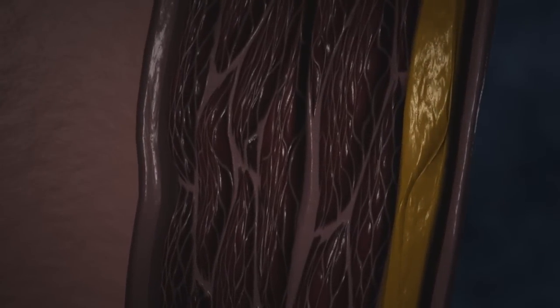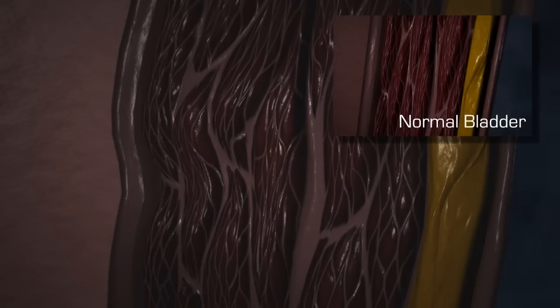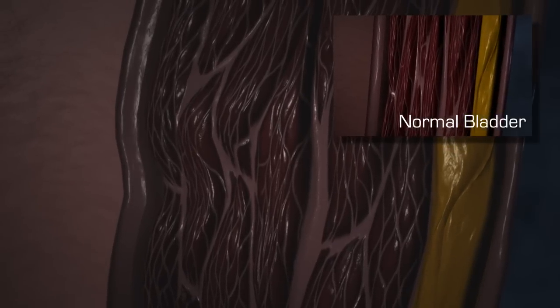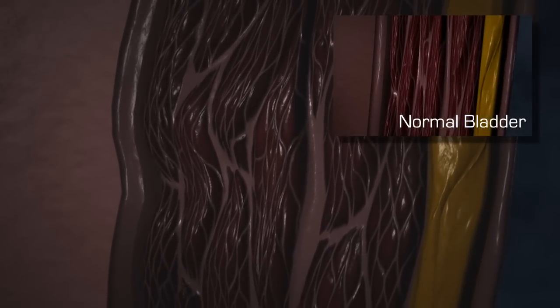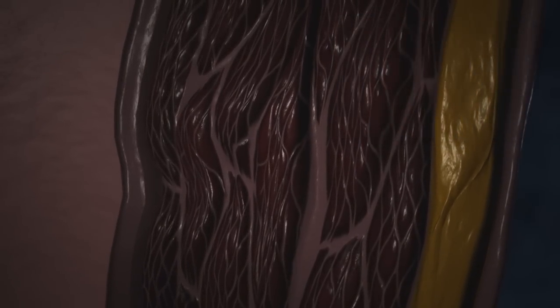The fibroproliferative muscle mass thickens the bladder wall, reducing the bladder's elasticity and compliance. The bladder will no longer be able to expand during urine collection or collapse when it is empty, even if the urethral blockage is removed.